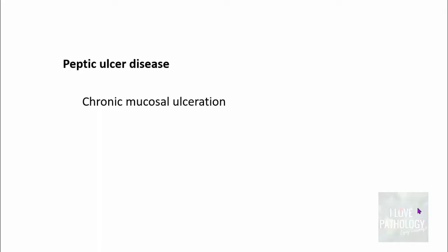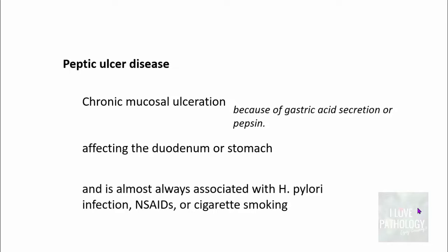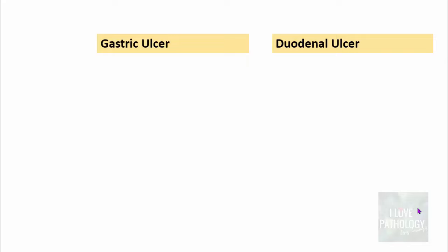Peptic ulcer disease is basically a chronic mucosal ulceration caused by gastric acid secretion or pepsin. It affects predominantly the duodenum and the stomach, and is almost always associated with Helicobacter pylori infection, non-steroidal anti-inflammatory drugs, or cigarette smoking. Let's move straight into understanding the differences between gastric and duodenal ulcer.